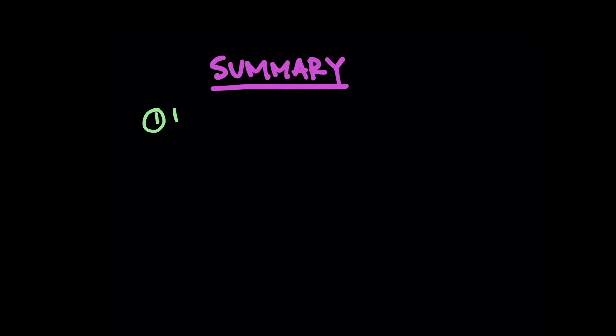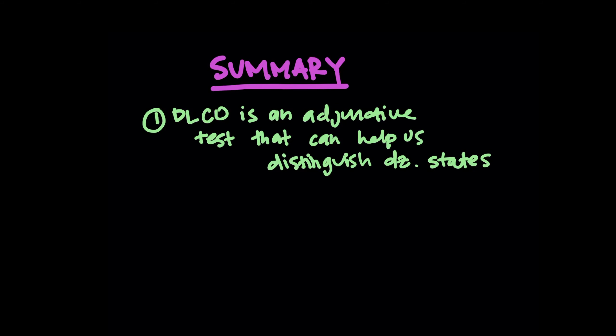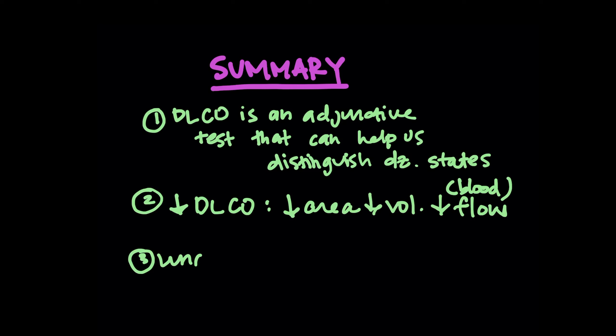So while there are a lot more nuances to this, and it can certainly be discussed more, I just want to summarize what we've talked about so far. The D-L-C-O in my mind is an adjunctive test, and it can help us distinguish disease states that we were thinking about from the spirometry and the volumes. A decrease in D-L-C-O is either a decrease in surface area, volume, or blood flow.